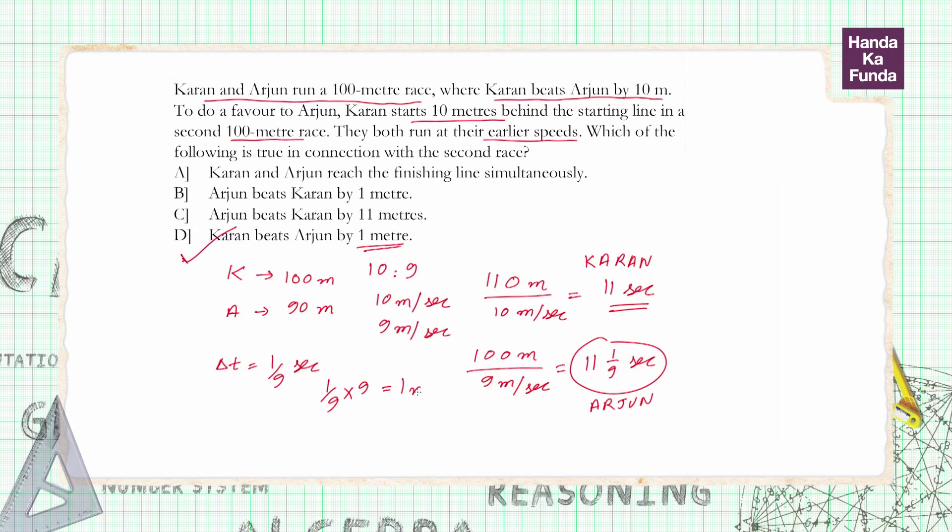per second, he will cover an extra distance of 1 meter. So that is the distance by which Karan beats Arjun. I hope you got this, the answer is option D, thank you.